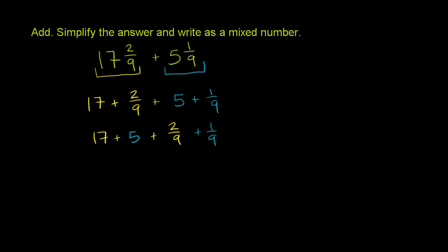We could do this in any order. And we know what 17 plus 5 is. We've done that before. 17 plus 5 is 22. So we have 22 plus...